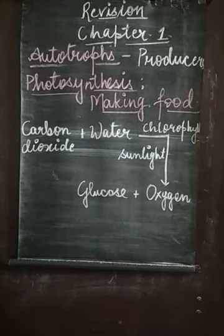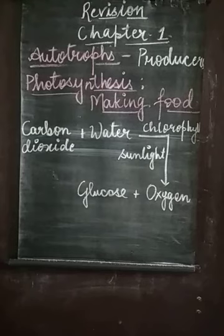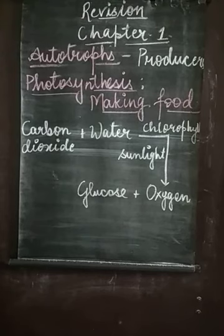In your previous class, you learned about the iodine test on leaves, by which you can find out where starch is present. Starch is a form of food — a form of glucose, a carbohydrate. When you put iodine on a particular part, that part will turn blue-black in color, showing that starch is present there and indicating that food has been prepared in that plant part.